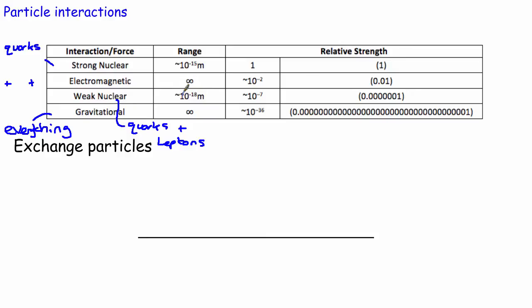Even if you're looking at nuclei, you don't really see the weak nuclear force do very much at all. We're going to look at the strong nuclear and weak nuclear force in a later video. The electromagnetic and gravitational force, however, have got an infinite range — they act over really really big distances. That's one reason why we see them all the time: you can be a long way from something but still feel the gravity of it.